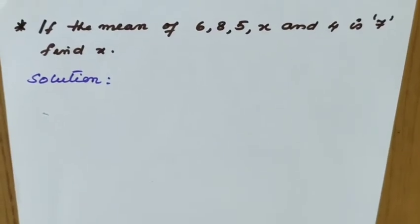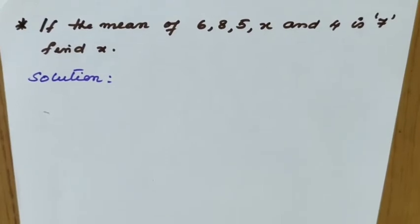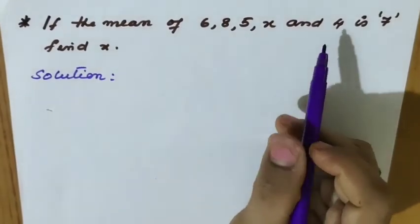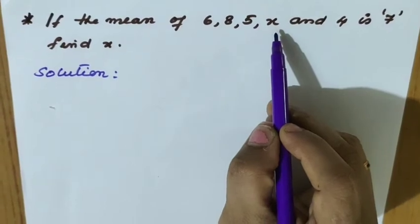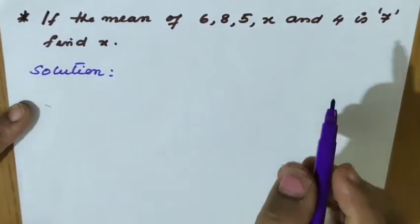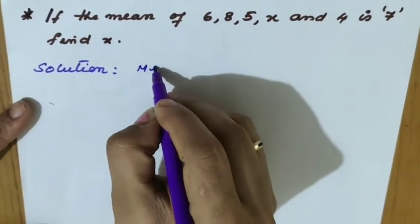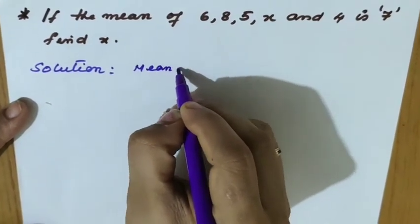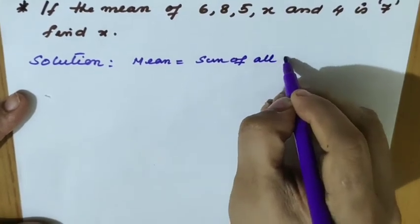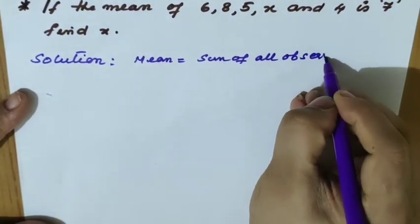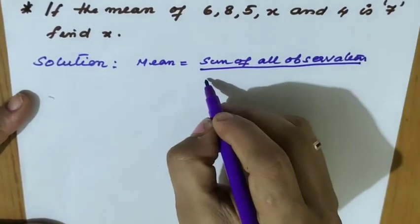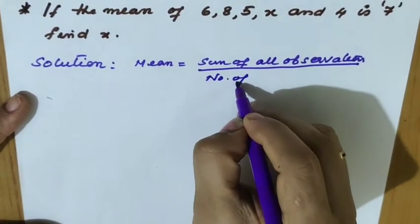If the mean of 6, 8, 5, x, and 4 is 7, find x. Here there are 5 observations, one of which is unknown — that is x. Mean equals sum of all observations divided by total number of observations.